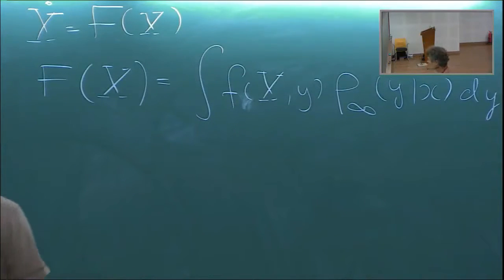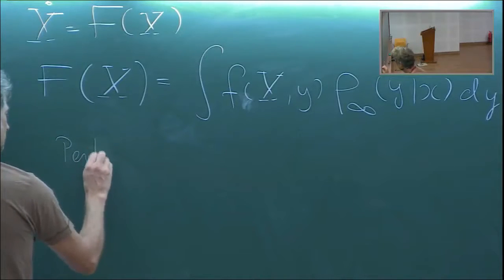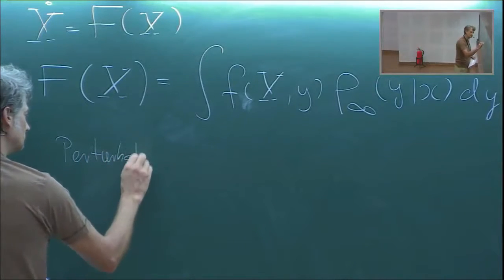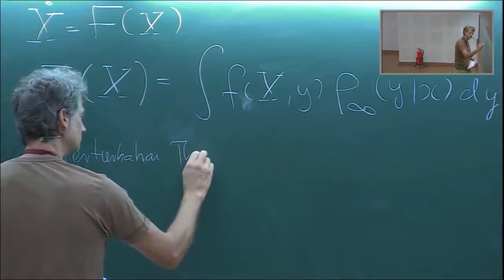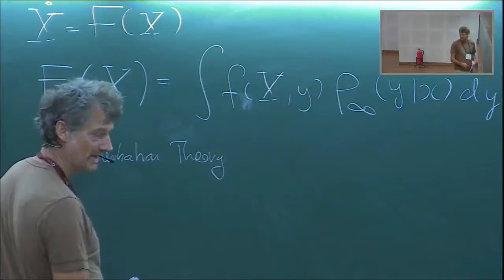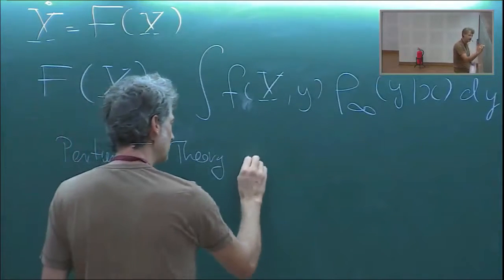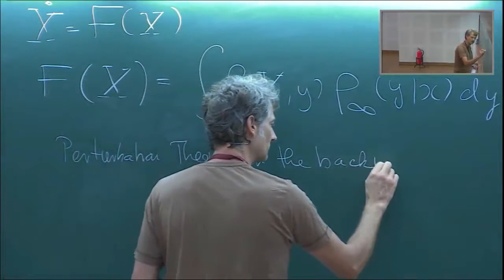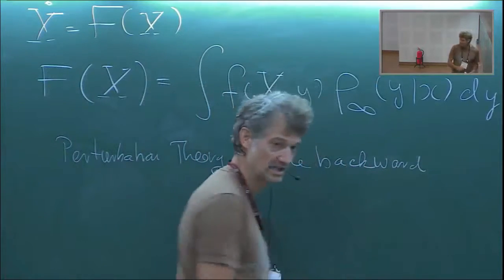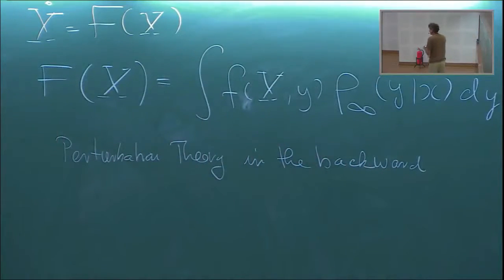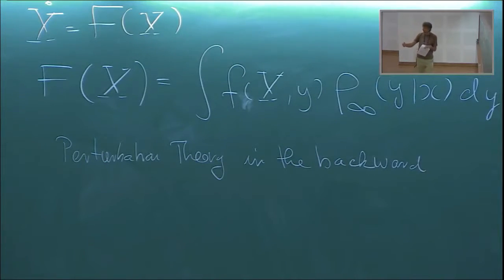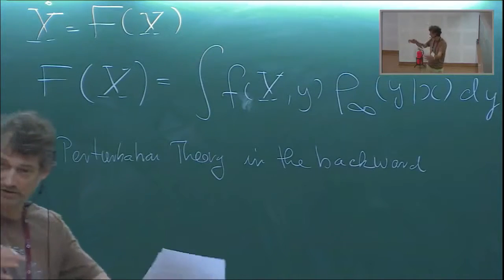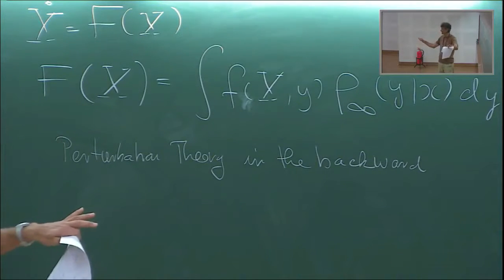We're going to do this in the backward Kolmogorov picture — the equation that describes the temporal evolution of expectation values. You could also do it in the Fokker-Planck equation picture; you get exactly the same result.